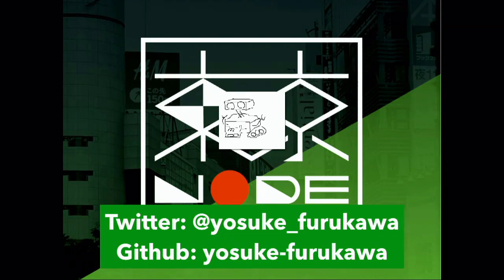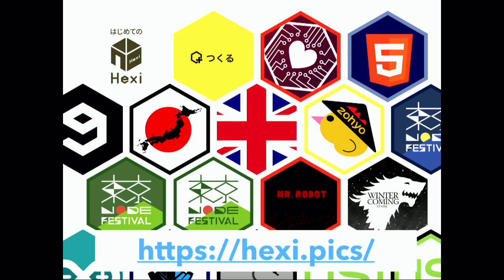My Twitter handle is yosuke_furukawa and my GitHub account is yosuke-furukawa. I'm also the creator of a hexagonal sticker site named Hexy, which can send hexagonal stickers worldwide. JS Confesia has cool stickers — though not the hexagonal kind. Organizers, please create some cool stickers on this site! I have lots of stickers on the front desk, so please pick some up and feel free to ask me.